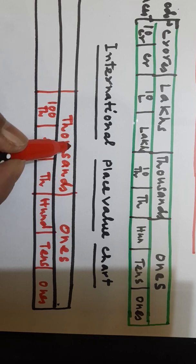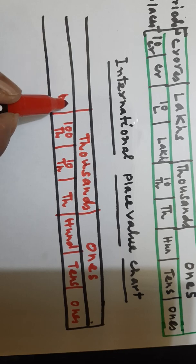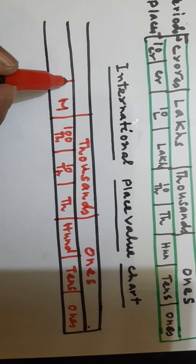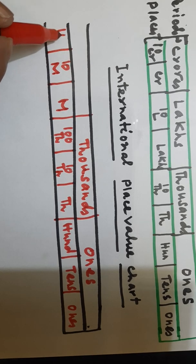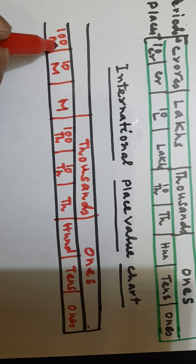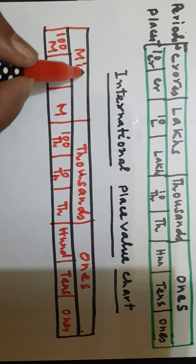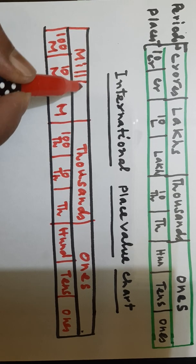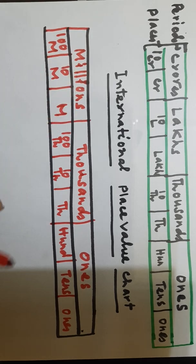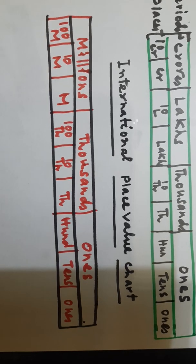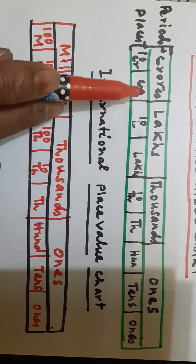This is the thousands period. Then millions come: one million, ten million, hundred million. This is the millions period. Millions are absent in the Indian place value chart — instead, lakhs and crores are present there. In the international system, lakhs and crores are absent, and millions are present.